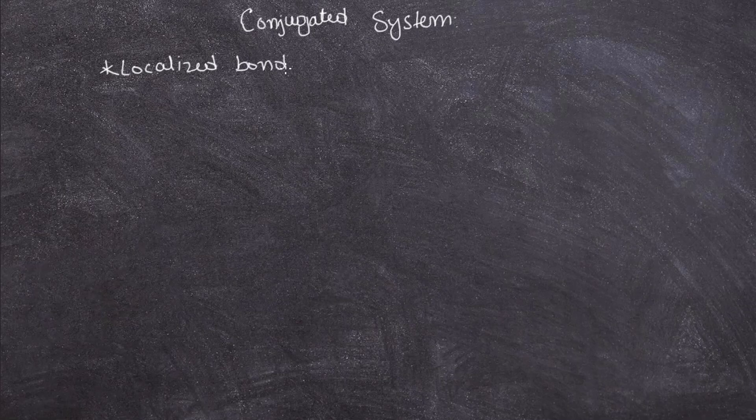Now let's discuss conjugated systems. Conjugated systems are two types: one is the localized bond and another is delocalized bond.